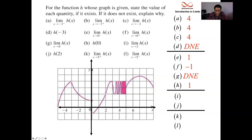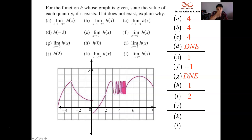At x equals 2, the limit as x goes to 2 with no indication of left or right: you check both sides and find it's headed towards 2. The left-hand limit is headed towards 2, the right-hand limit is headed towards 2. Yes, there's an open circle, but an open circle means there's no function value — we don't know the y value, so the function value does not exist.